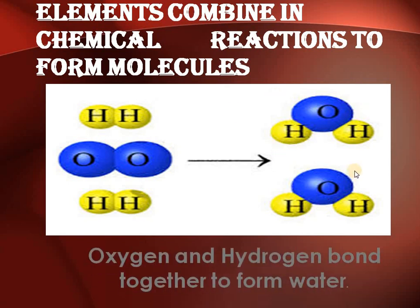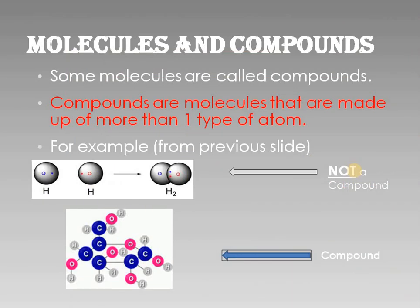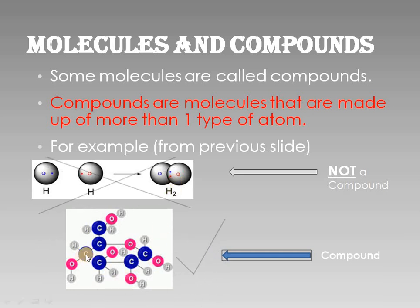This water molecule is a compound. Some molecules are also called compounds — compounds are molecules made of more than one type of atom. For example, H₂ is formed from one type of element only, so it is not a compound; it is just a molecule. But the sugar molecule C₆H₁₂O₆ is a compound because it contains elements in a fixed proportion with more than two elements.